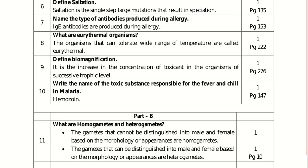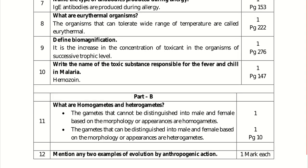Part B has two-mark questions. The 11th question is: what are homogametes and heterogametes? Gametes that cannot be distinguished into male and female based on their morphology are termed homogametes — they are similar gametes. Gametes that can be distinguished into male and female based on their morphology are heterogametes.